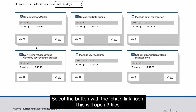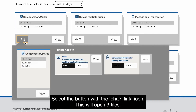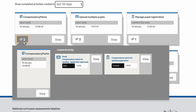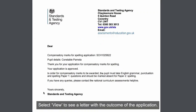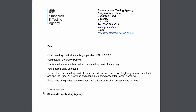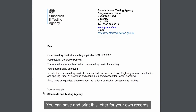Select the button with the chain link icon. This will open three tiles. Select View to see a letter with the outcome of the application. You can save and print this letter for your own records, but you must not send it with the pupil's test script for marking.